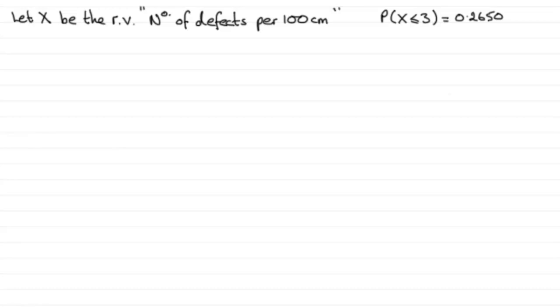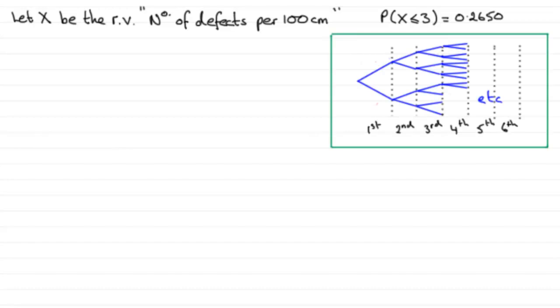Now to understand a problem like this, I imagine a tree diagram something like this, where I've got my first plank, second plank, third plank, etc., all the way down to the sixth plank.